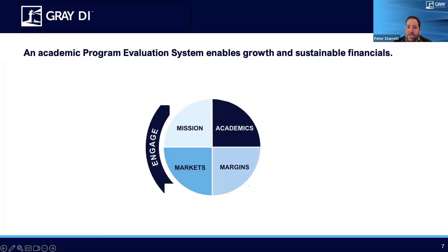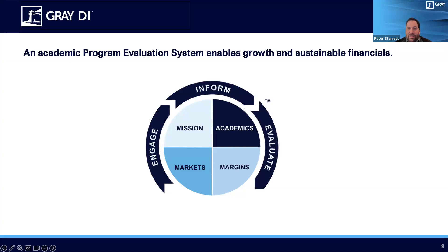In order to make decisions with all this information, you need to engage the right team across the institution. You need to provide them with the right information — which is the information we just talked about — and finally you need a good process to evaluate programs and make decisions. Having the right people and the right information is very important and critical towards arriving at programmatic decisions.